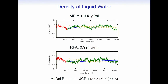What do you get? Here is the Monte Carlo density profile. MP2 shows some oscillations and fluctuations, but converges to a density of 1.02 grams per milliliter — not bad. RPA gives a slightly lower density of 0.99 grams per milliliter. Very good results. It seems that using non-local correlation and treating everything on the same level is a way to get very good results for these systems.